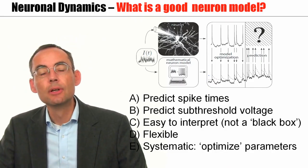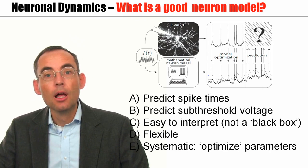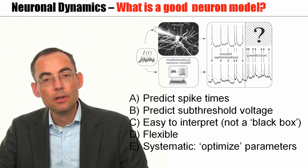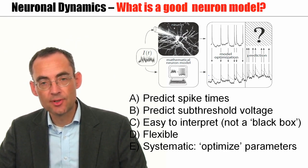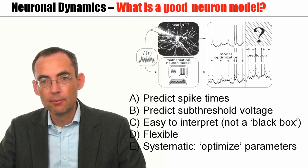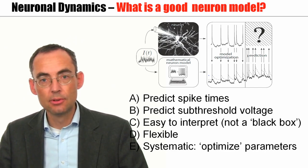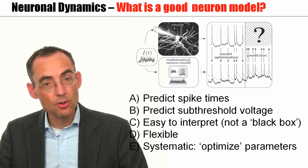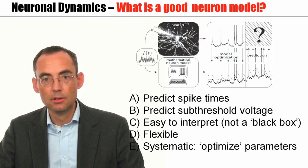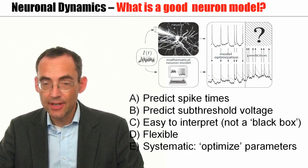That's what we have seen so far is with a GLM, with a spike response model with escape noise, we can optimize parameters in a systematic fashion. We can find the best prediction of the subthreshold voltage by solving a quadratic optimization problem, by finding the minimum of a quadratic error function. And therefore, straightforward procedures exist. But so far, our approach has been limited to the subthreshold membrane potential. Ideally, from a neuron model, we would also like to predict spikes. And that's next.